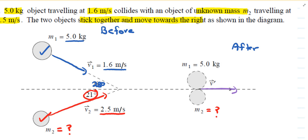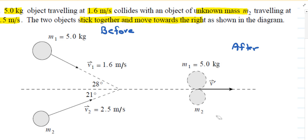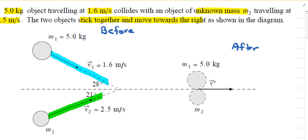Now let's construct a vector diagram, which is very useful for collision problems with angles. The first vector in blue goes in the downward direction, the green vector goes in the upward direction, and once the two objects collide they move together to the right. Based on those three vectors we want to create a vector diagram.